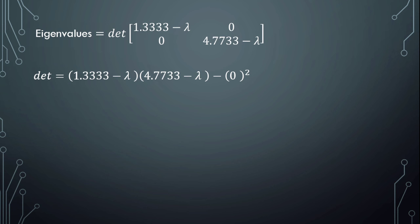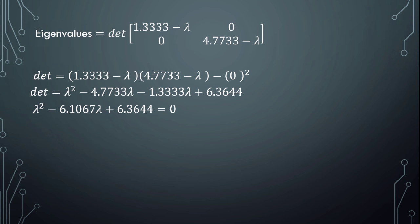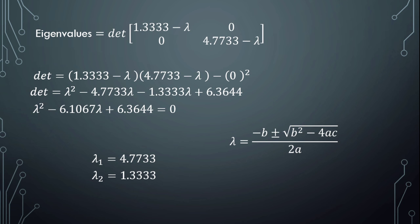The determinant gives (1.3 minus lambda) times (4.7 minus lambda) minus 0 squared, which equals lambda squared minus 4.7 lambda minus 1.3 lambda plus 6.11, simplified to lambda squared minus 6.1 lambda plus 6.3 equal to 0. This quadratic equation is easy to solve and gives lambda 1 equal to 4.7 and lambda 2 equal to 1.3.